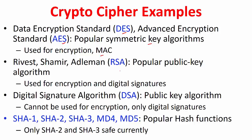RSA is a popular public key algorithm used for encryption as well as digital signatures. Digital signatures provide integrity as well as authentication. DSA is another digital signature algorithm, which is a public key algorithm — it cannot be used for encryption but works for digital signatures. There are many popular hash functions: SHA1, SHA2, SHA3, MD4, MD5, but only SHA2 and SHA3 are safe currently; the others are broken.